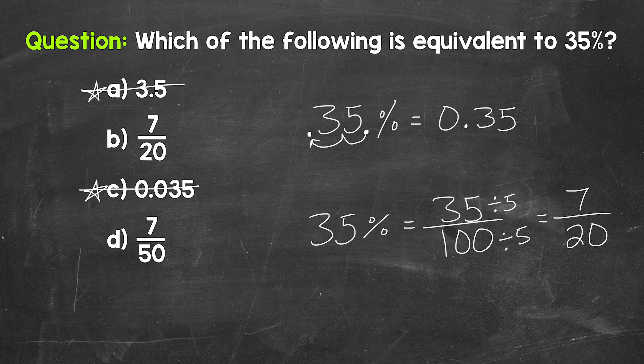And that is one of our choices, choice B. So which of those choices is equivalent to 35%? Well, B, seven twentieths.